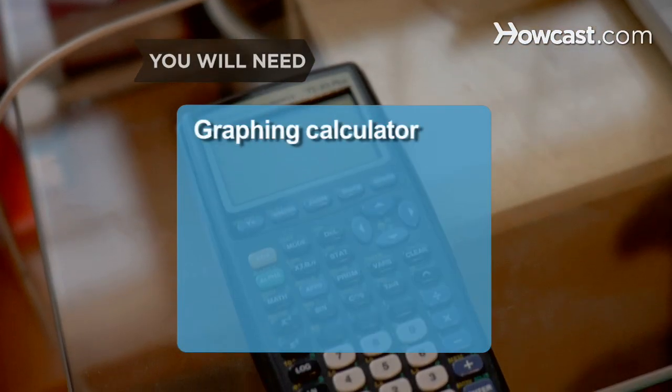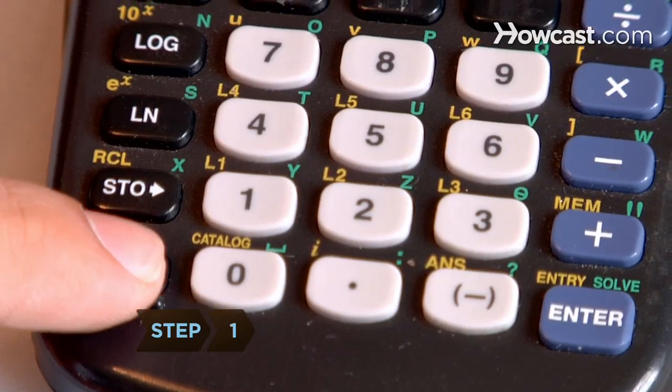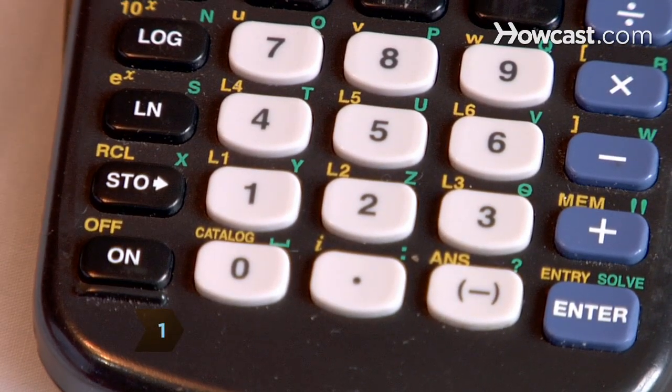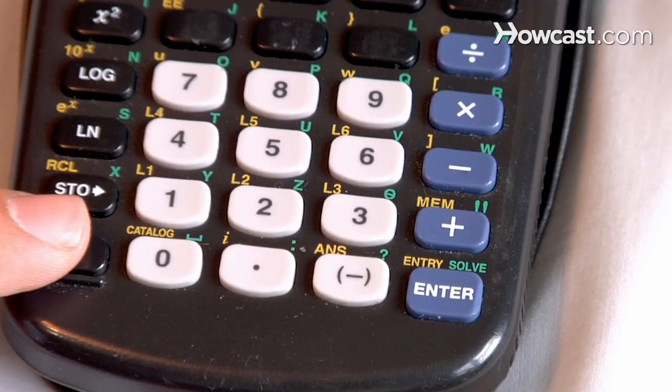You will need a graphing calculator and an understanding of the order of operations. Step 1: Turn on the graphing calculator by hitting the ON button and turn it off by holding down the second key and pressing the ON button.